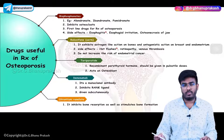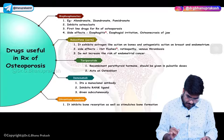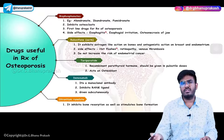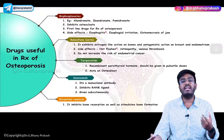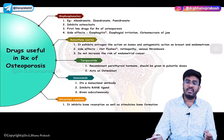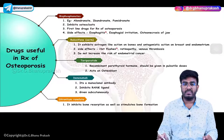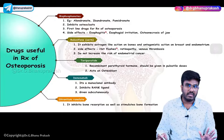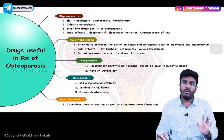Now let's look at drugs used in the treatment of osteoporosis. Osteoporosis is a decrease in bone mineral density — bones are getting thinned out and more resorbed. Bisphosphonates are the first group of drugs, which include alendronate, zoledronate, and pamidronate. Their mechanism of action is to inhibit osteoclasts or cause apoptosis of osteoclasts.